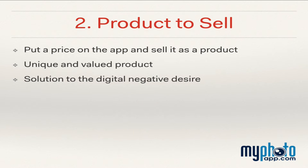Method 2 is similar to Method 1, but instead of giving apps away, you put a price on them and sell them just like any other product you sell. One of the best features of apps is that there are no variable costs associated with them. Even though you can create apps for practically nothing, the value to your client is high, so make sure they are priced appropriately. If you don't sell digital images, this is a great way to satisfy the digital image desires of your clients — sell them an app instead. Usually when you probe why people want digital images, it is to share with family, friends, or social media. The app can do that, and it is better in that your branding and contact info follow along.